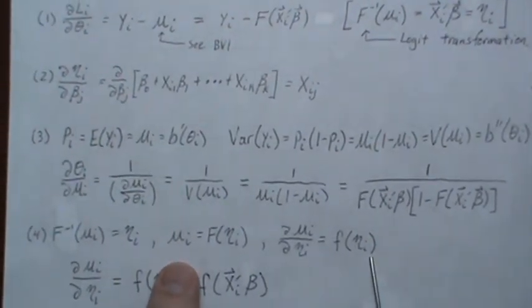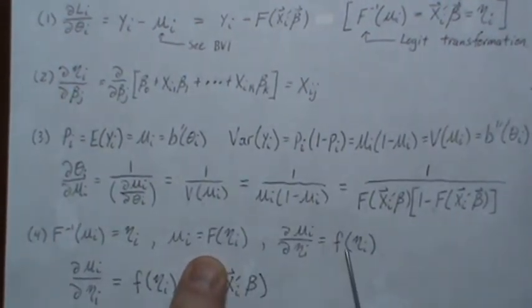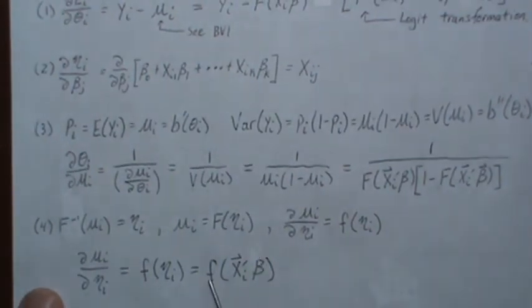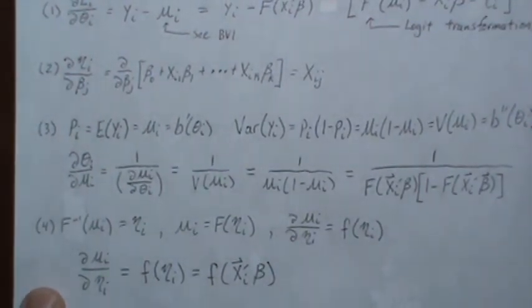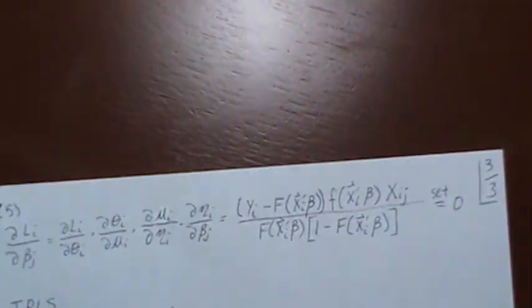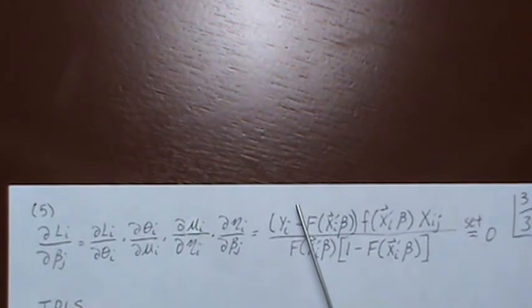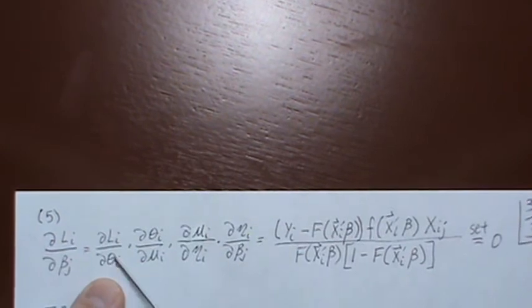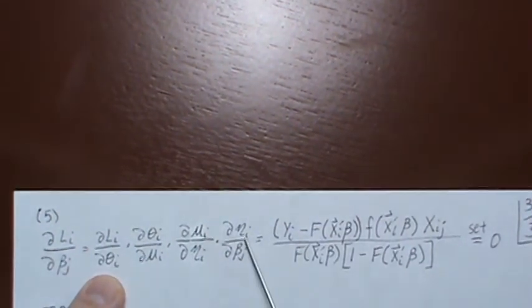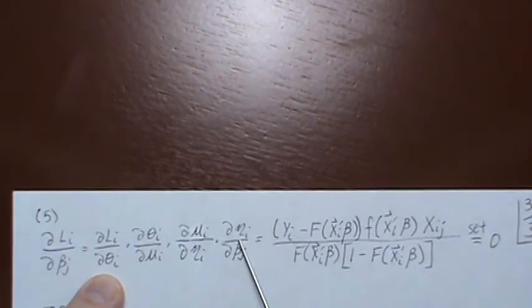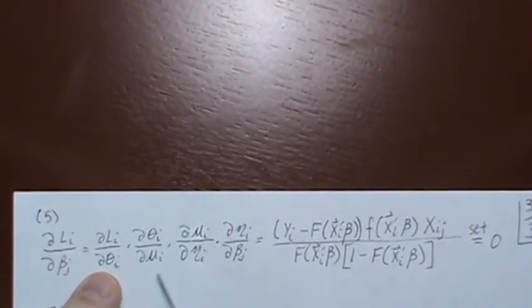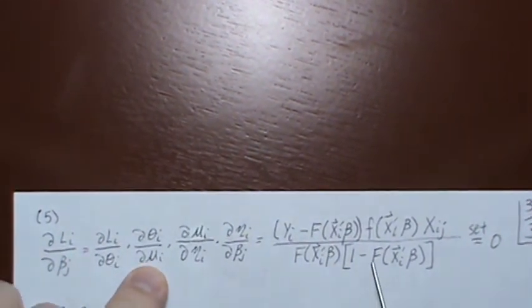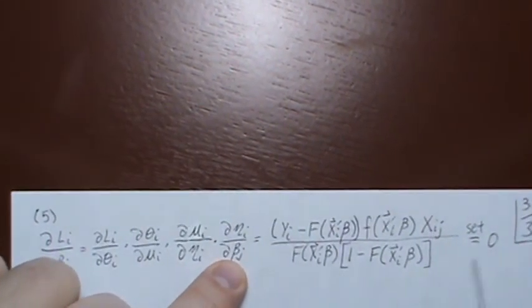The inverse function of our mean is this eta, that's the linear combination, that's the logit transformation. We can take capital F to both sides to get this, and then the derivative of mu_i with respect to eta is just the density evaluated at eta, right? The derivative of capital F is little f. So the derivative of mu_i with respect to eta_i is the density evaluated at our linear combination. Now we've put all the pieces together to come up with our derivative. This first one was an easy choice because the likelihood was in terms of theta, and eta is in terms of beta. Then we had to pick these so that they canceled leaving this. And when you put all the pieces together, that was the density, and that was x. And we set it to zero and solve, and we're going to do that through iteratively reweighted least squares.